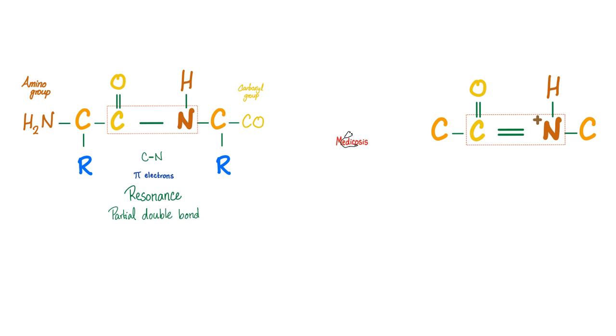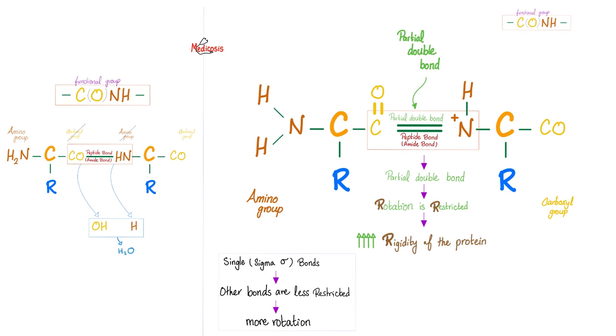CONH is the functional group. Between C and N, there are pi electrons. Therefore, there is resonance. What the flip is resonance? Resonance means magnification. They become more robust. Why? Because this is a partial double bond. But the N has to be N+. This bond is the peptide bond or amide bond. Can you describe it? Sure. It's a partial double bond. Therefore, rotation is restricted. Why? Because it's a double bond. You cannot rotate around a double bond. And if you cannot rotate, you are rigid. Contrast that with these single bonds. These are sigma bonds. Sigma is single. They are less restricted. Hashtag more rotation. Got some swirling action going.